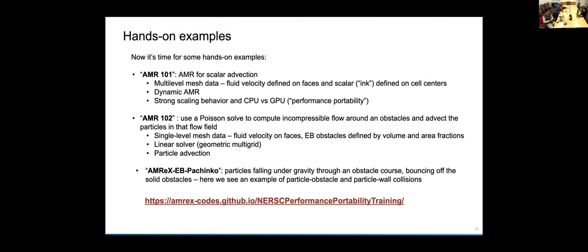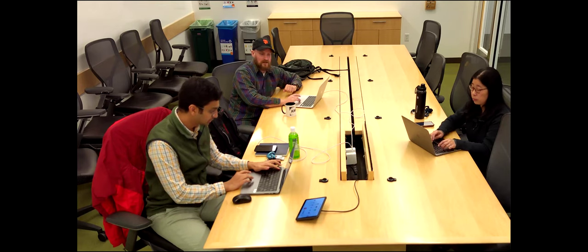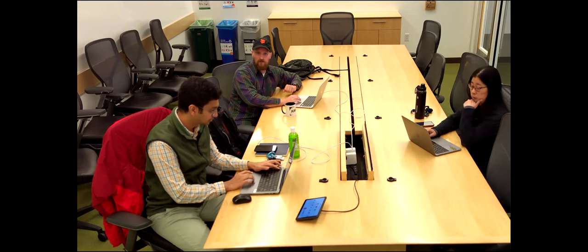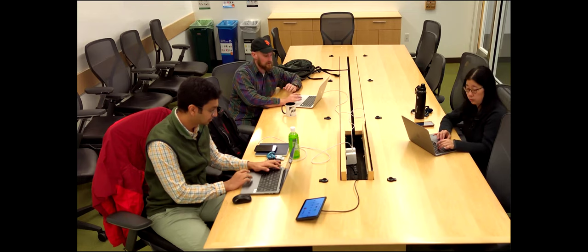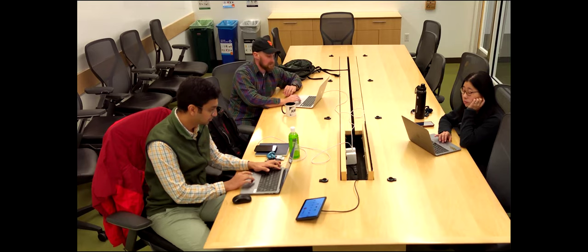And then finally, there's the AMREX-EB pachinko. So this is a fun one. So it's just like particles falling under gravity through an obstacle course, bouncing off solid obstacles. So this is basically an example of doing particle obstacle and particle wall collisions. And you can change the position of the particles and the obstacles by messing with the inputs files. So if you go to this website that's linked from the slides, there will be detailed kind of a walkthrough of basically how to run the different examples and different things you can try.